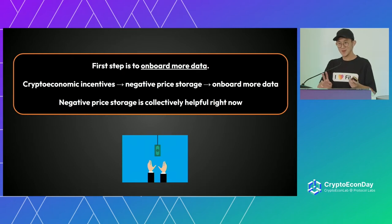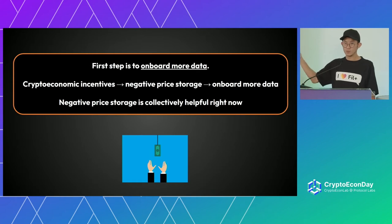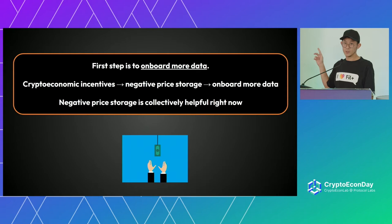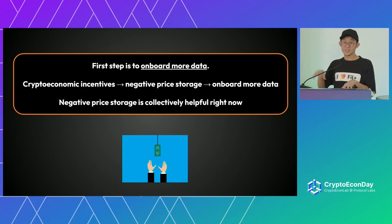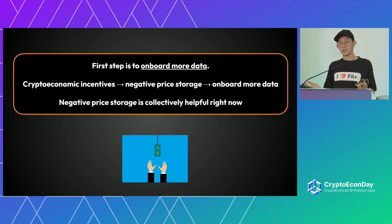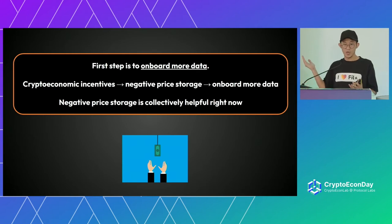This slide is supposed to show you the Filecoin master plan. Step one is to build the biggest decentralized storage network in the world, which we have already done. Step three is to build large-scale compute-to-data applications. We are at step two right now, which is to onboard more data to safeguard humanity's data — and one of the ways to do that is through crypto-economic incentives where negative price storage has emerged.